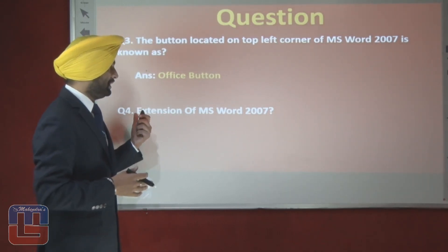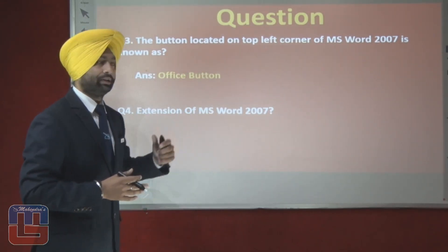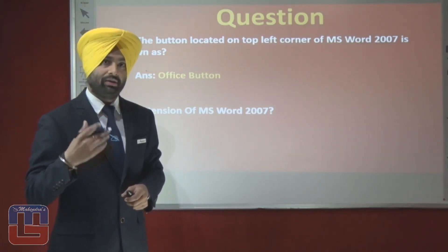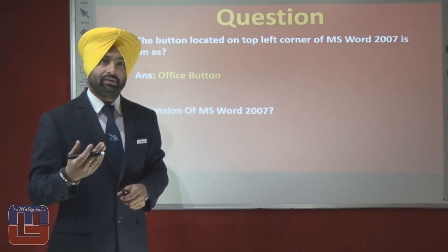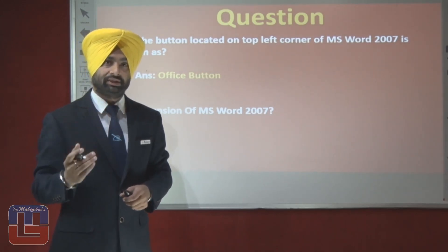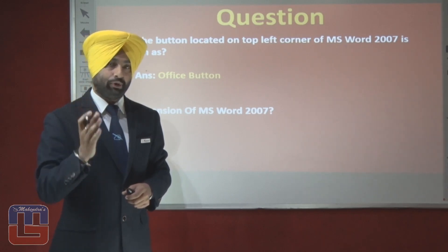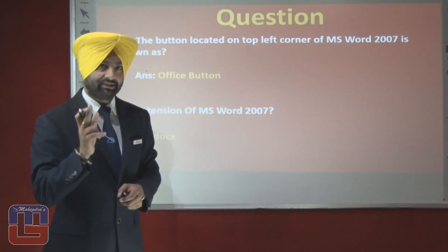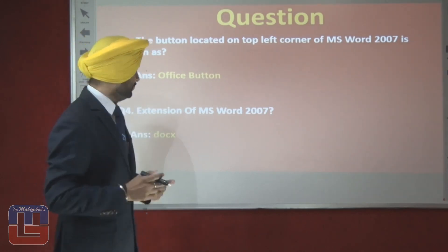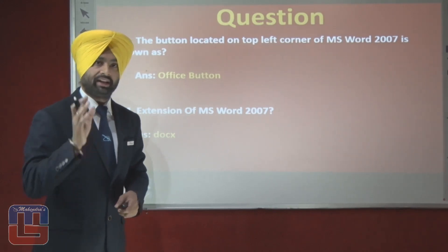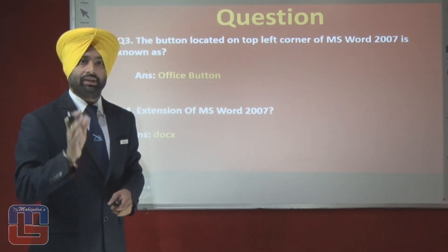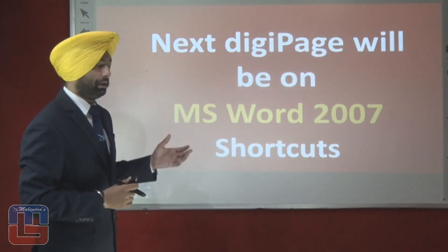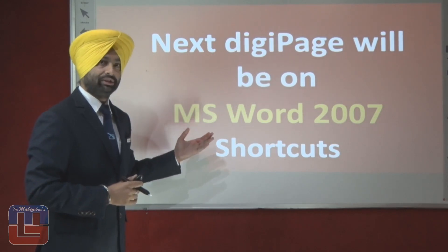Question 4: what is the file extension of MS Word 2007? The answer is not .doc. Recall that versions from 2007 onwards have the default extension .docx — D-O-C-X. The 'x' is added to .doc, making .docx the default extension of MS Word 2007.